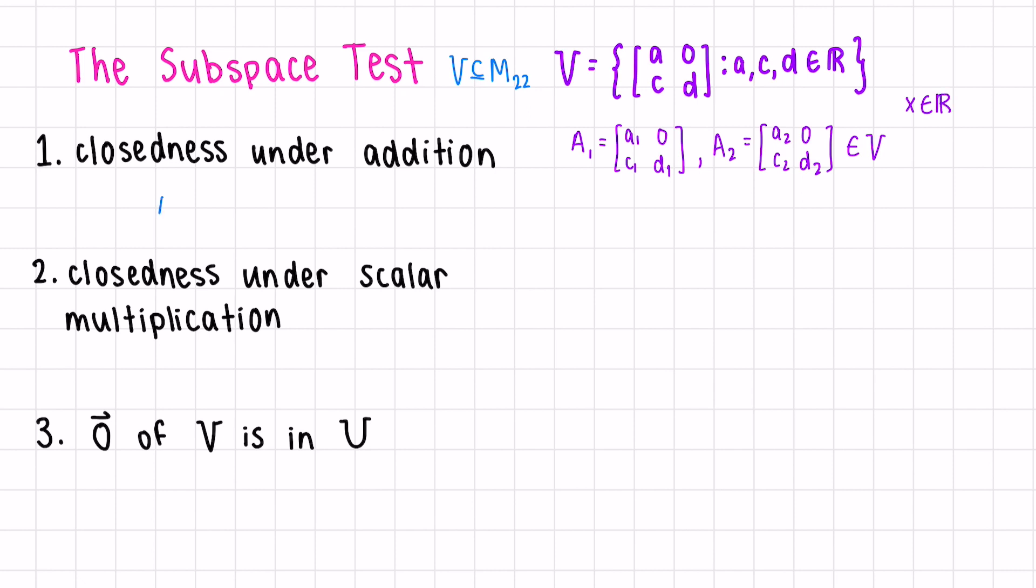Next, let's check a1 plus a2. We add component-wise, we get a1 plus a2, 0 plus 0, c1 plus c2, and d1 plus d2. And since the a's, the c's, and the d's were just real numbers, we get another real number and another matrix in this form.